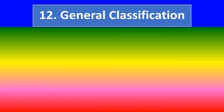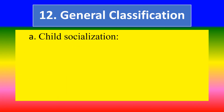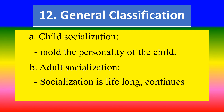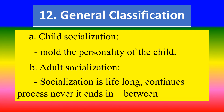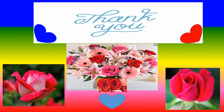Twelfth, general classifications: A) Child socialization — molds the personality of the child. B) Adult socialization — socialization is a lifelong, continuous process that never ends. Thank you, have a wonderful day.